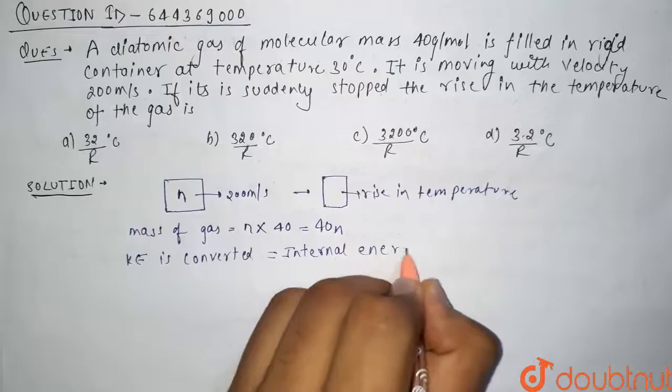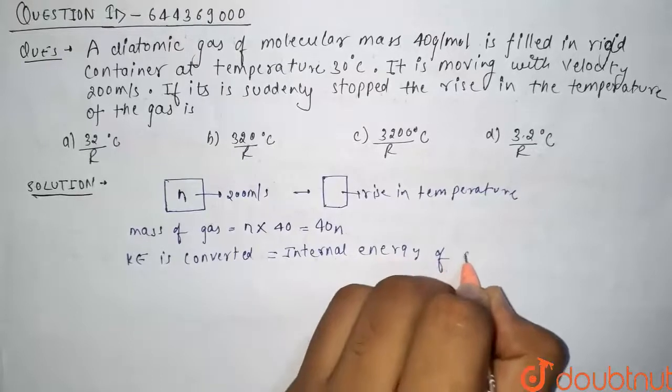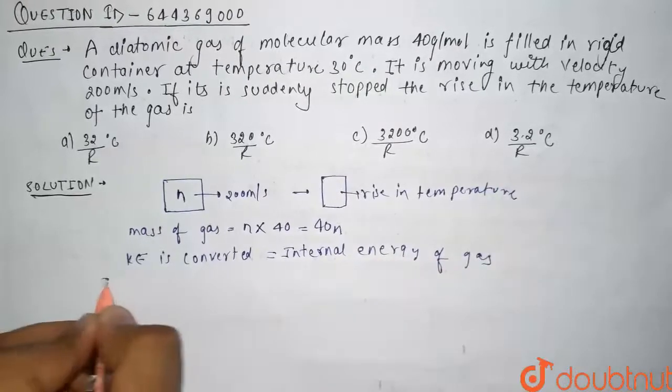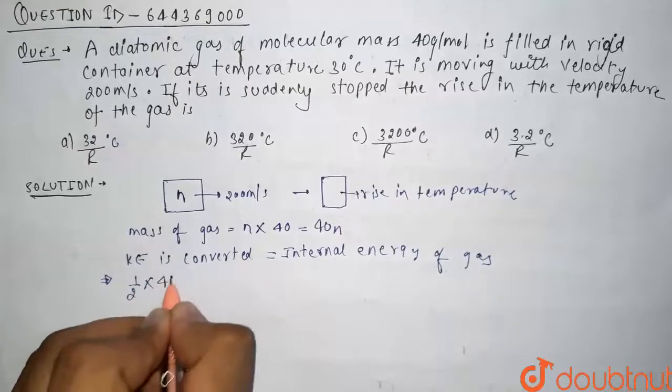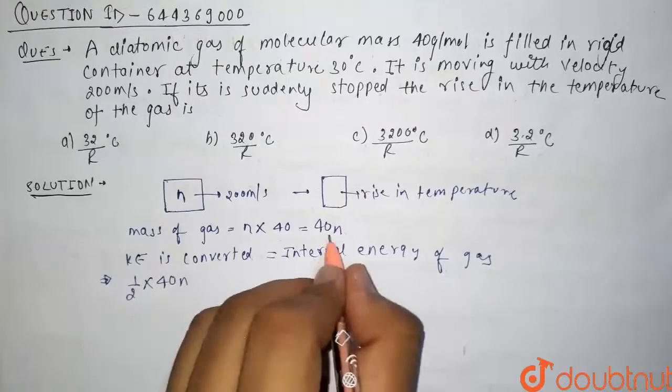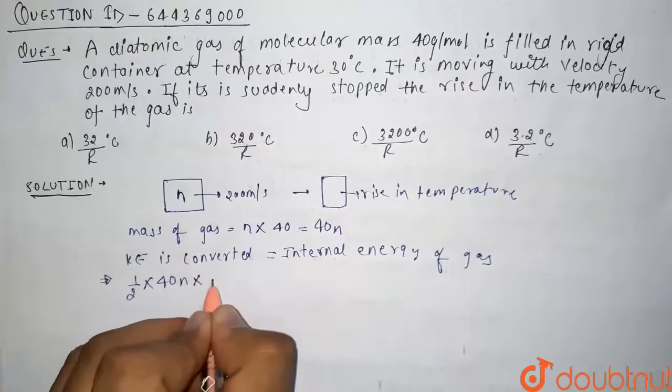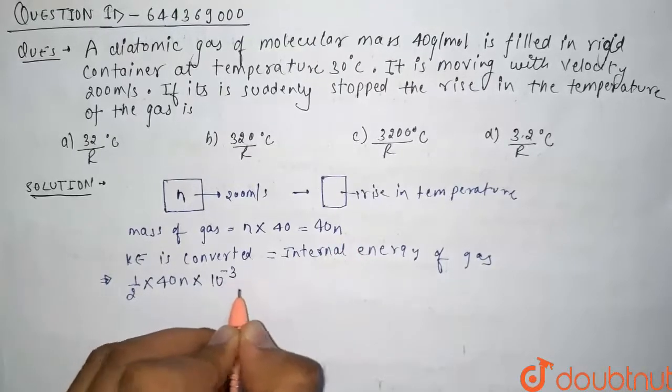Now what is kinetic energy? It is half mv squared. Half m, that is 40n. Since it is in grams, we have to firstly convert it to kg, so it will be times 10 to the minus 3, times v squared, that is 200 whole squared.